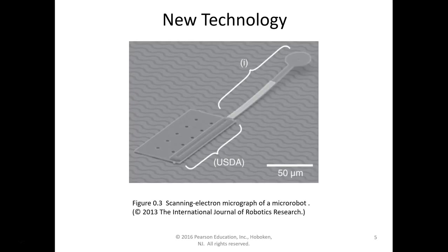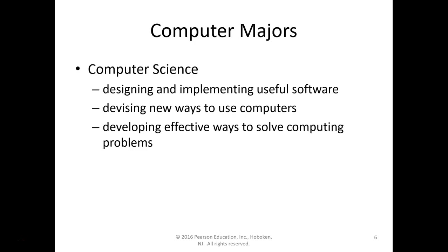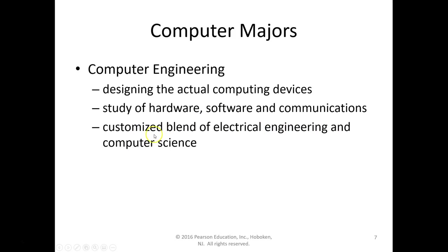Here you can see some old computers from IBM and a scanning electron micrograph of micro robots — examples of new technology. Computer science is usually about designing and implementing useful software — think Google, Amazon, Facebook — and also about designing new ways to use computers and developing effective ways to solve computing problems.